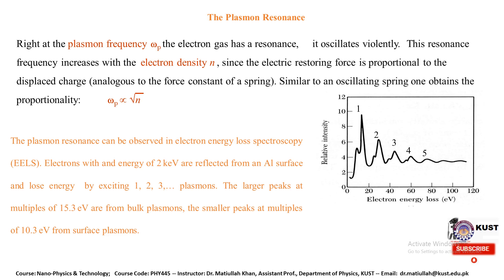The smaller peaks at multiples of 10.3 electron volts are from surface plasmons. This shows that plasmons are broadly divided into categories including bulk plasmons and surface plasmons.